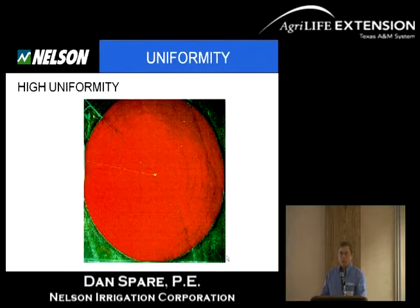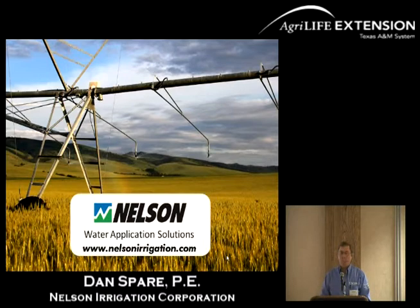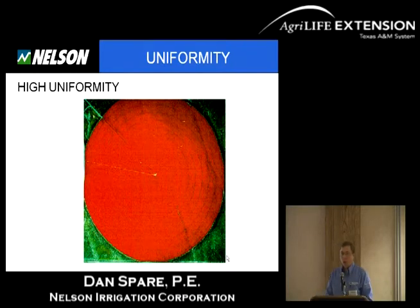I wanted to start off talking a bit about uniformity. The topic of uniformity comes up threaded through my presentation. Anyone running center pivot irrigation systems really must understand the need for uniformity — it can be described in different terms. If you look at a couple of photos I'll present here, you can see some uniformity. This field, shown in a photograph from above, shows a high degree of uniformity in most of the field.